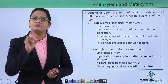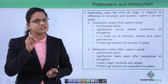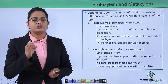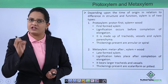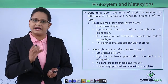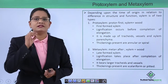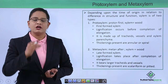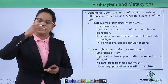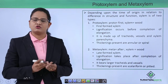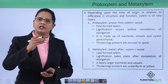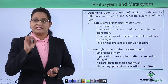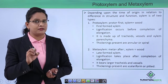Proto xylem — 'proto' means first, and 'xylem' means wood — is the first-formed wood. Proto xylem cells are generally smaller in size. Lignification occurs before the completion of elongation, so as the vessels and tracheids begin to elongate, their lignification is already complete before they reach their full length.